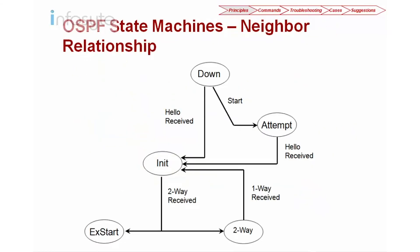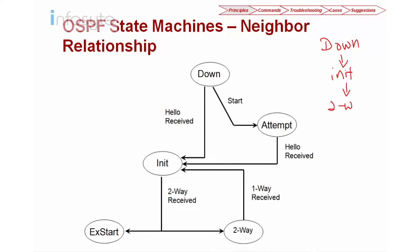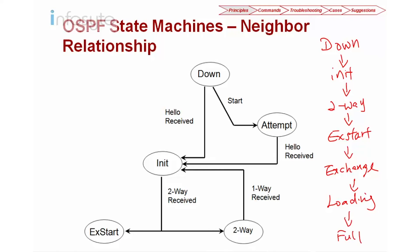Next we look at the state machine for the neighbor relationship. There are seven states in total. From the Down state, they go to Init state. From Init, they go to Two-Way. From Two-Way, they go to ExStart. From ExStart, they go to Exchange. From Exchange, they go to Loading. And the last state is Full state. This seven-state machine is used to perform both the neighbor relationship and also the adjacency.